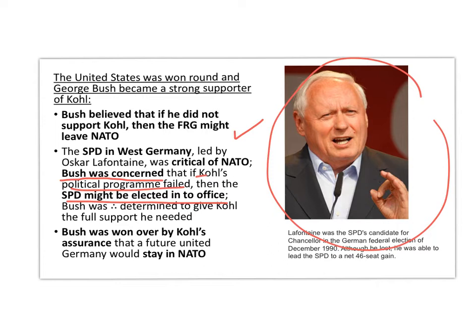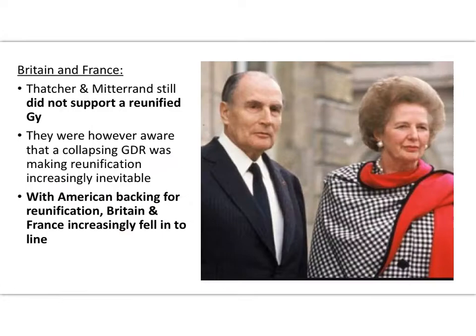All the main features were therefore in place for a deal between Kohl and Bush. Lafontaine was the SPD's candidate for chancellor — although he lost the December 1989 elections, he led the SPD to a net 46-seat gain, which worried Bush. Bush wanted to keep Kohl in power to consolidate good relations between the USA and West Germany.